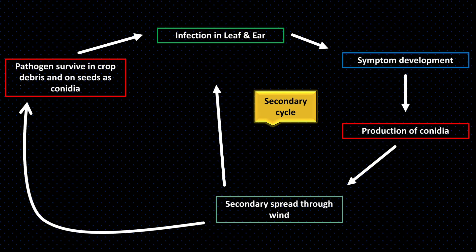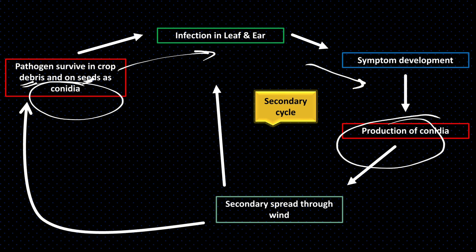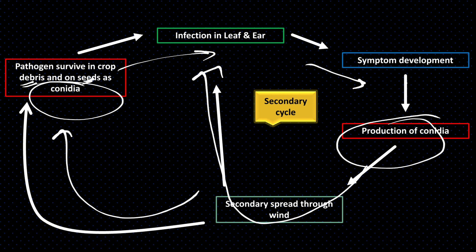The pathogen survives in crop debris and on seeds in the form of conidia. It infects leaves, ears, stems, and glumes. The pathogen grows in plants, produces symptoms, then generates more conidia which spread by wind to other plants causing secondary infection. When the crop is finished, conidia survive in crop debris.